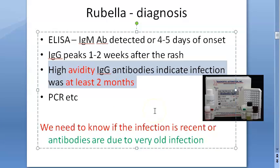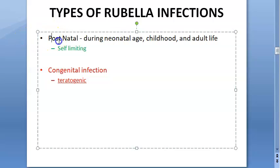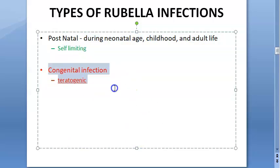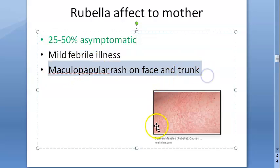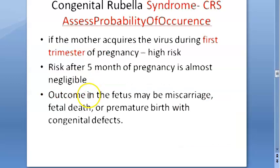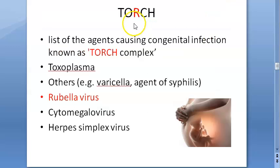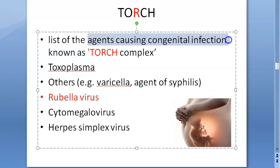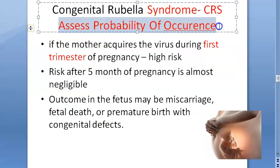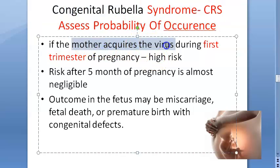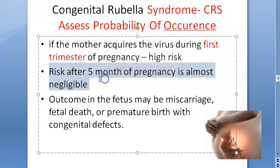When the person is not pregnant, rubella is a very self-limiting condition. But if the mother gets it during pregnancy — especially during the first trimester or before 20 weeks — it can be teratogenic. In exams, the probability of occurrence of congenital rubella syndrome will be asked: risk is highest in the first trimester and negligible after 20 weeks (5 months) of pregnancy.